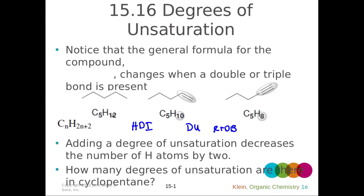In 1-pentene, we're missing two hydrogens relative to the fully saturated molecule. So instead of 12 hydrogens, we only have ten — we're missing two because we have a double bond. In 1-pentyne, we have a triple bond, so we have two pi bonds. In order to form a pi bond, we have to be missing two hydrogens. So to have two pi bonds, we have to be missing four hydrogens.